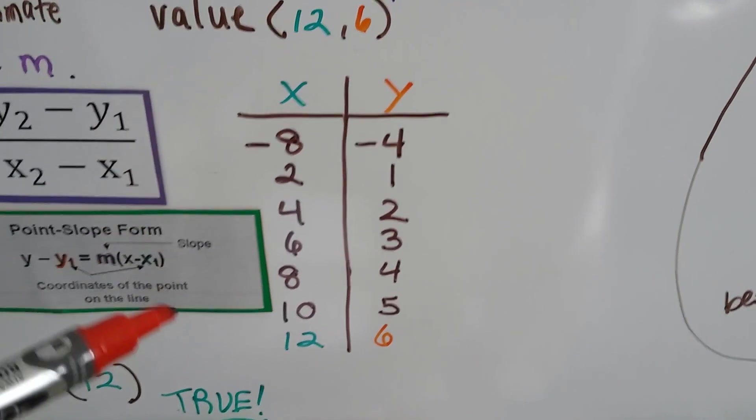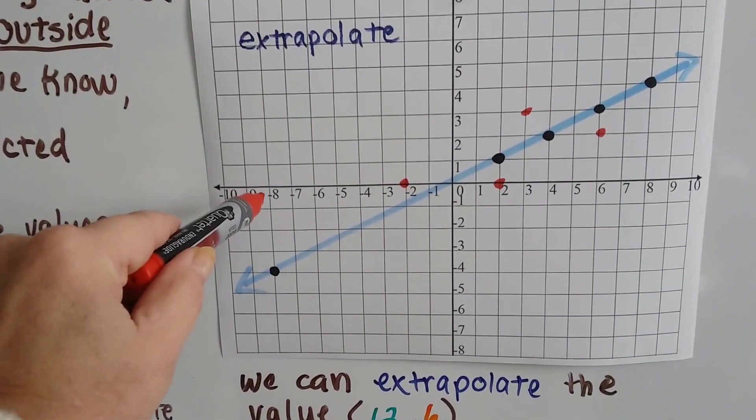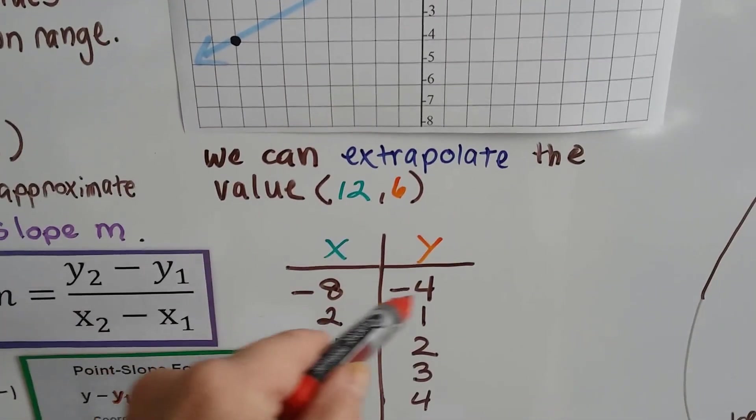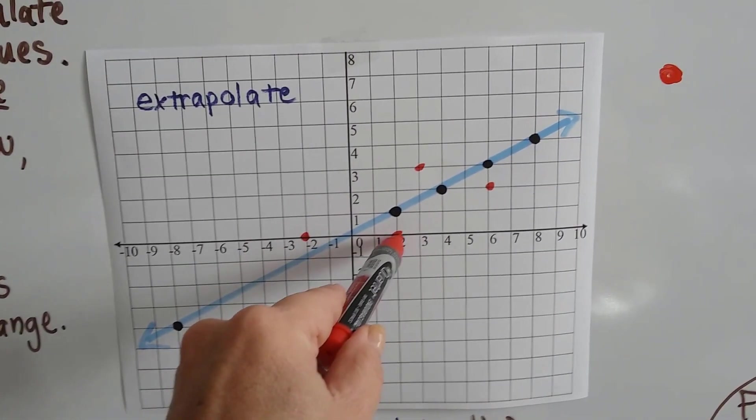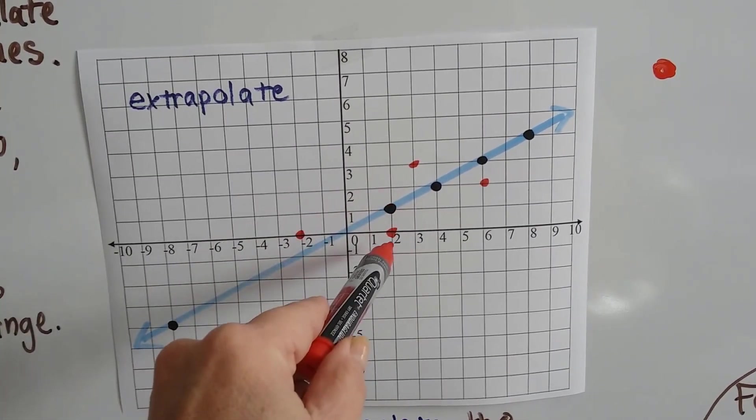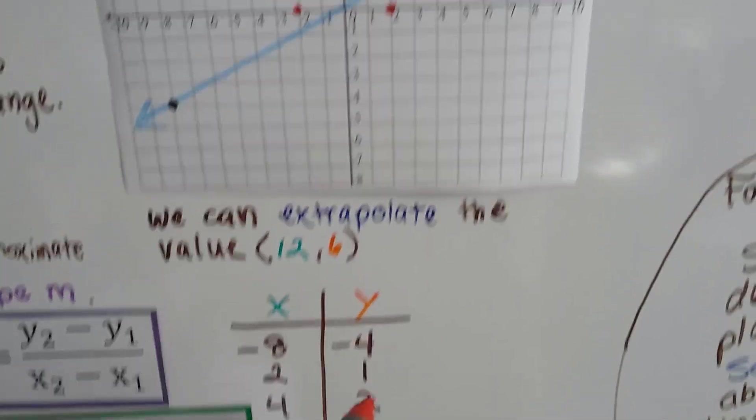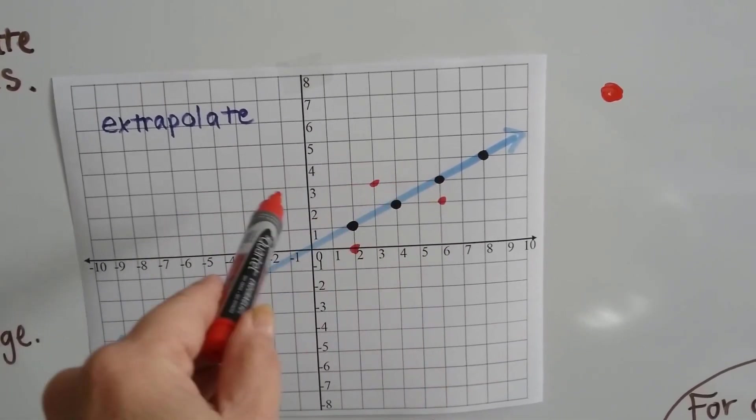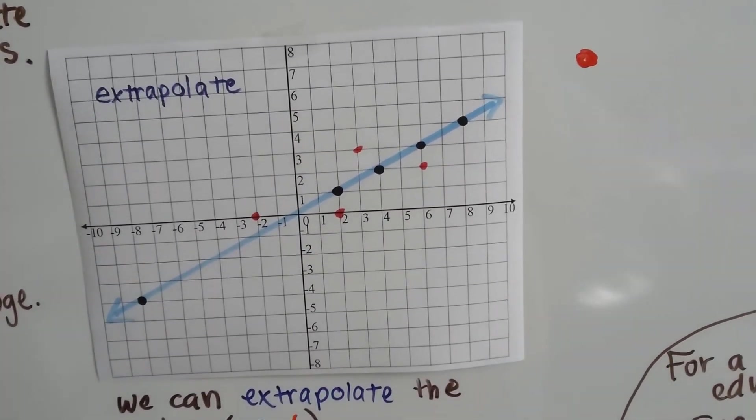So if we had a function table with x and y values like this, we can see here's our negative 8, negative 4. And that is an x and y value on our function table. And we can see that 2 and 1 is also an ordered pair. And 4 and 2 and 6 and 3. Here's 4 and 2 and 6 and 3. And look, 8 and 4.